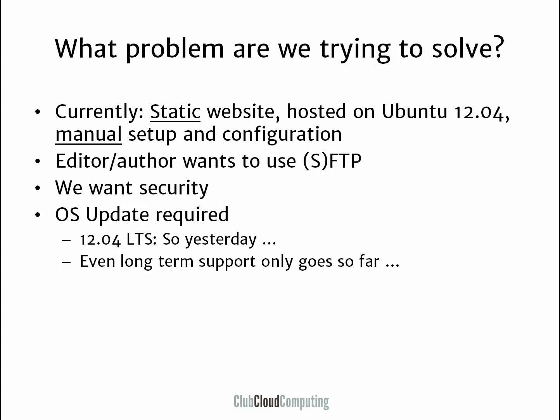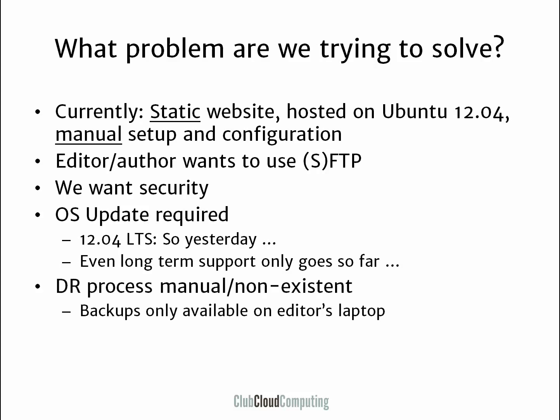What we could have done is go into the virtual machine and do an operating system upgrade. But if it ain't broke, don't fix it — we're not expecting this to really work straight off the bat. This brings us to the next point: the disaster recovery process. What happens if the VM goes south in a way that's unrecoverable? We didn't have much of a process there. The backups existed basically on the editor's laptop. This is a static website, no big deal, but there was no simple way of recovering or reinstalling this website.